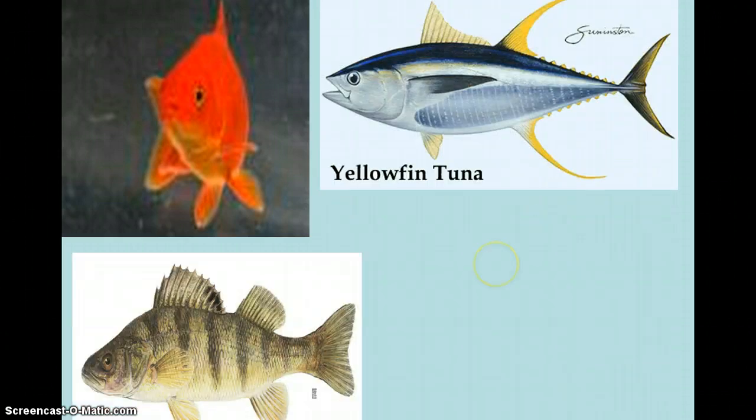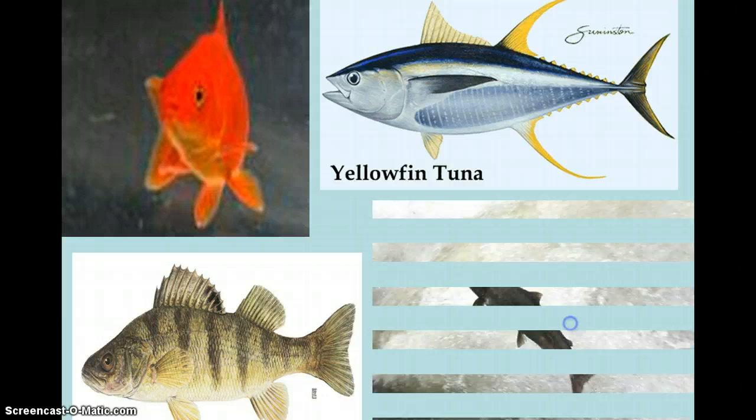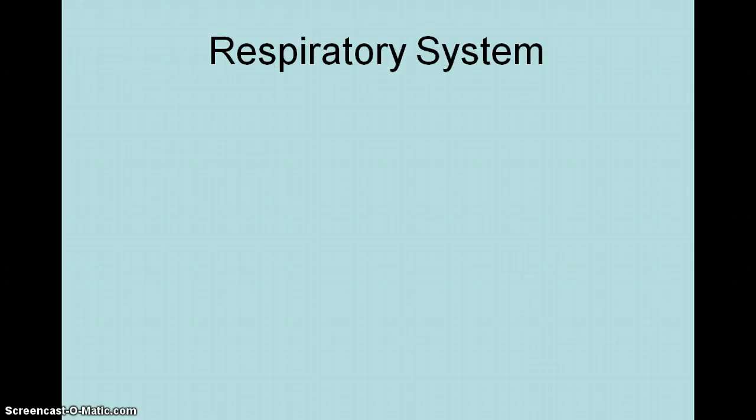Here are some examples of bony fish: goldfish, tuna, and this is the fish we're going to dissect — it's not a turpin, it's a perch. Salmon is also an example. Now I'm going to talk a little bit about the respiratory system of fish, which is a unique system. Every fish besides lamprey, hagfish, shark, and ray is a bony fish.